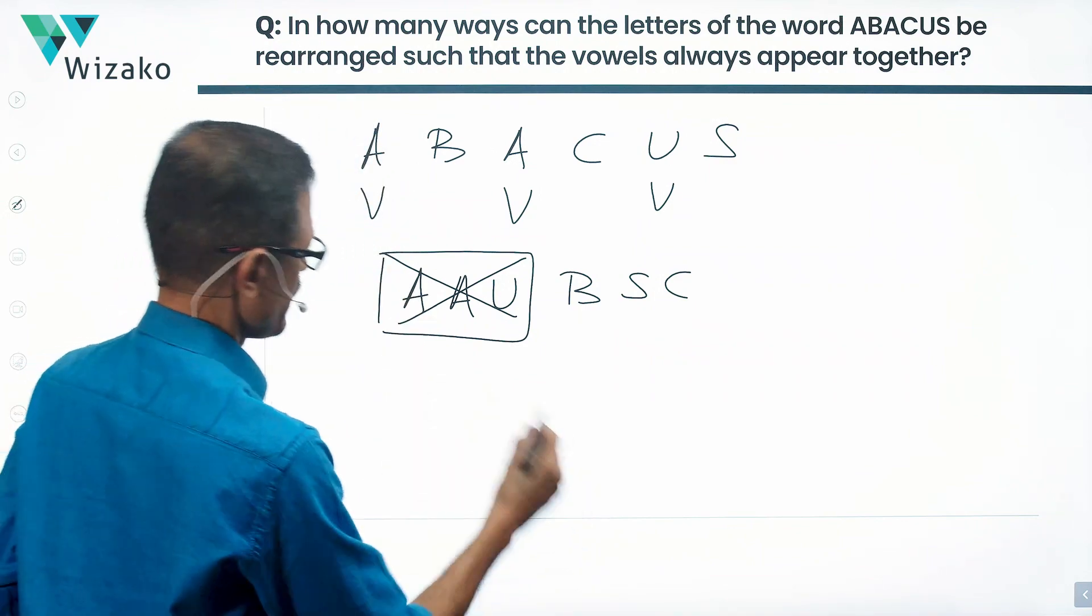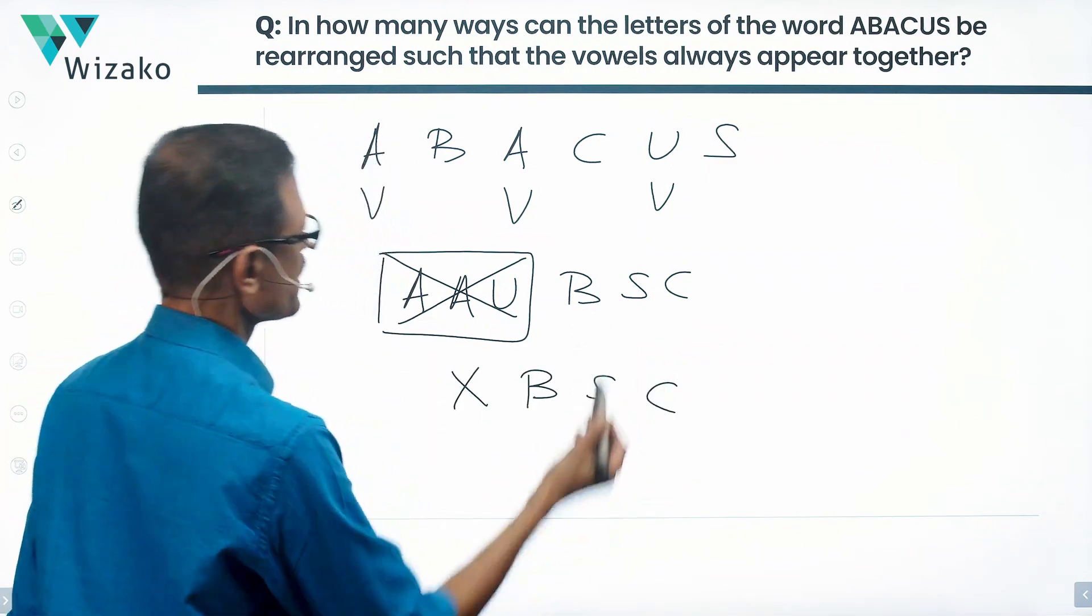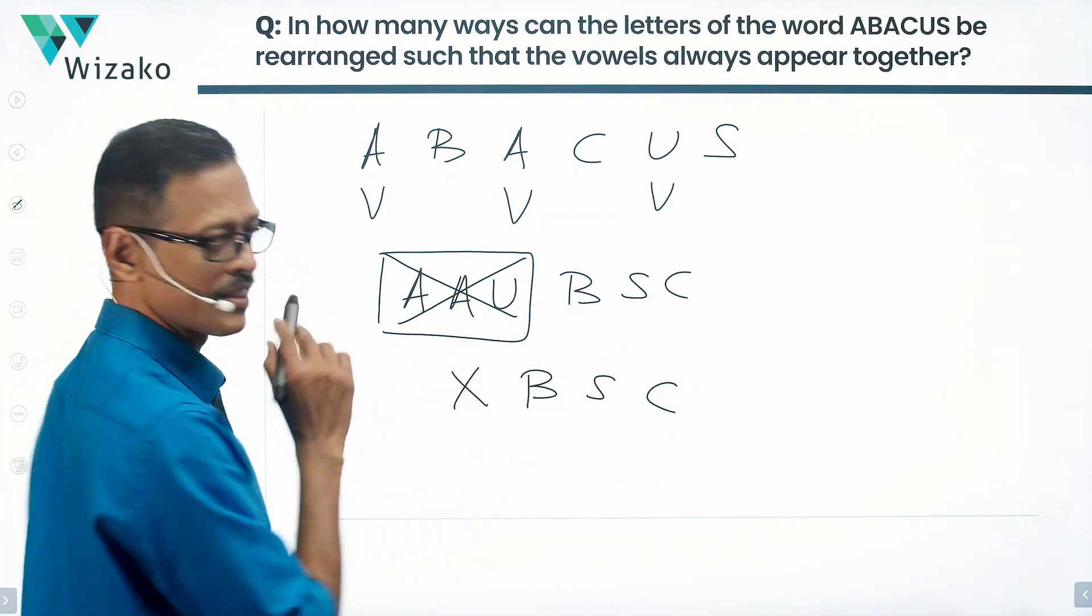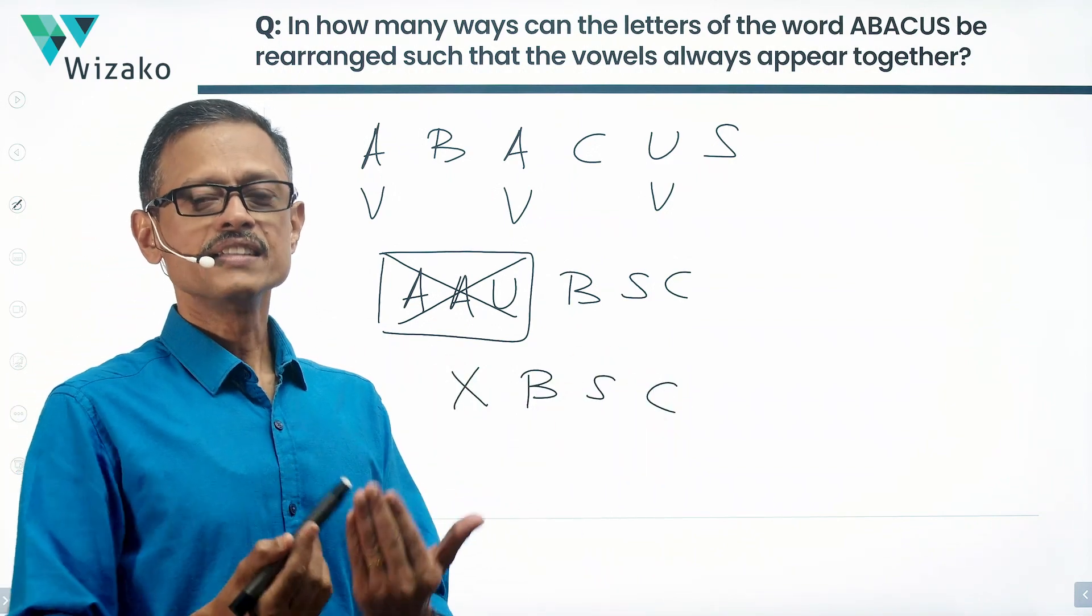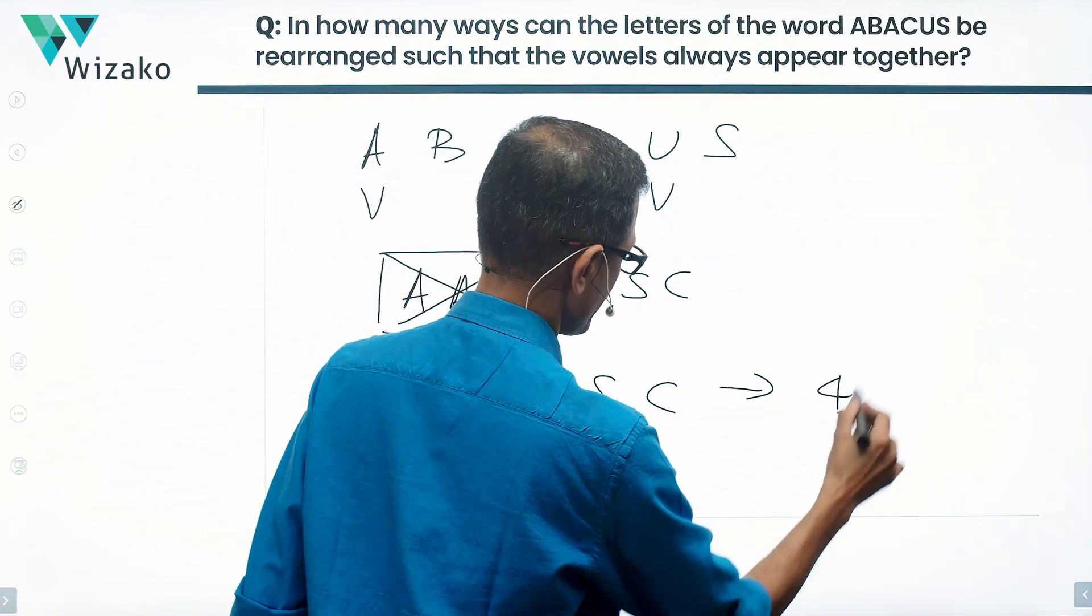So this unit of X and the B, S, C - essentially three consonants and this X which is a unit of three vowels - are four distinct letters. These four can reorder in essentially four factorial ways.